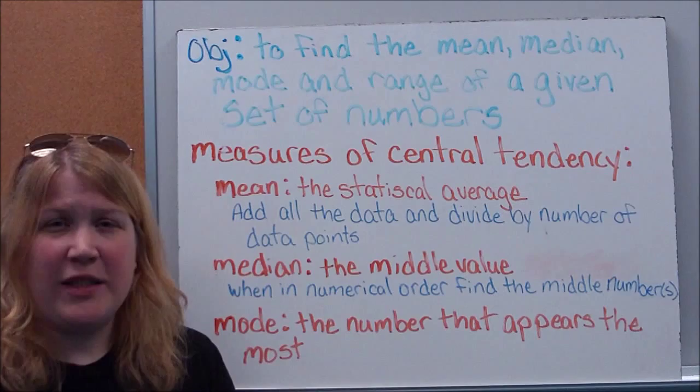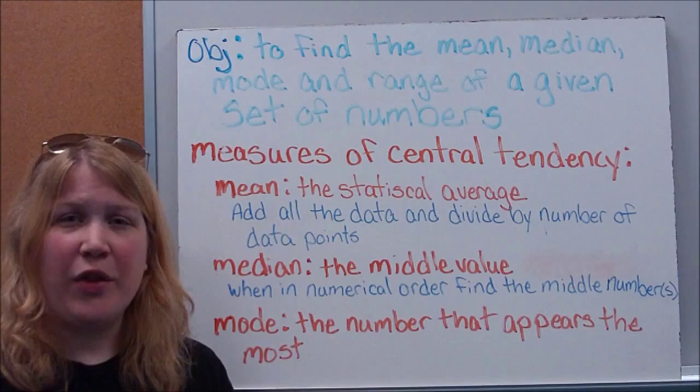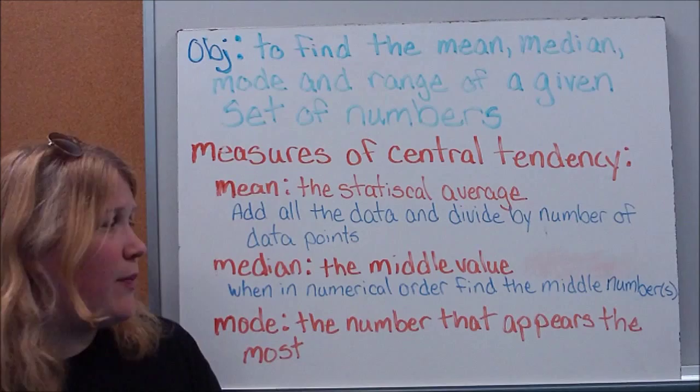Within our measures of central tendency, let's define these terms. Mean is probably something you've calculated before. You've just called it something else. We call it the average. The mean is simply the statistical average. How do we calculate that? We add up all the numbers we've been given. We divide that total by how many different points of data or numbers we had when we added them together.